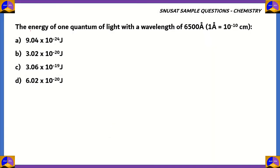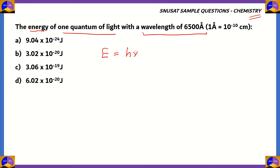The next question: the energy of one quantum of light with a wavelength of 6,500 angstroms is? This is another chemistry question from atomic structure. In that part, we learn about the photoelectric effect and the energy of quanta of light.